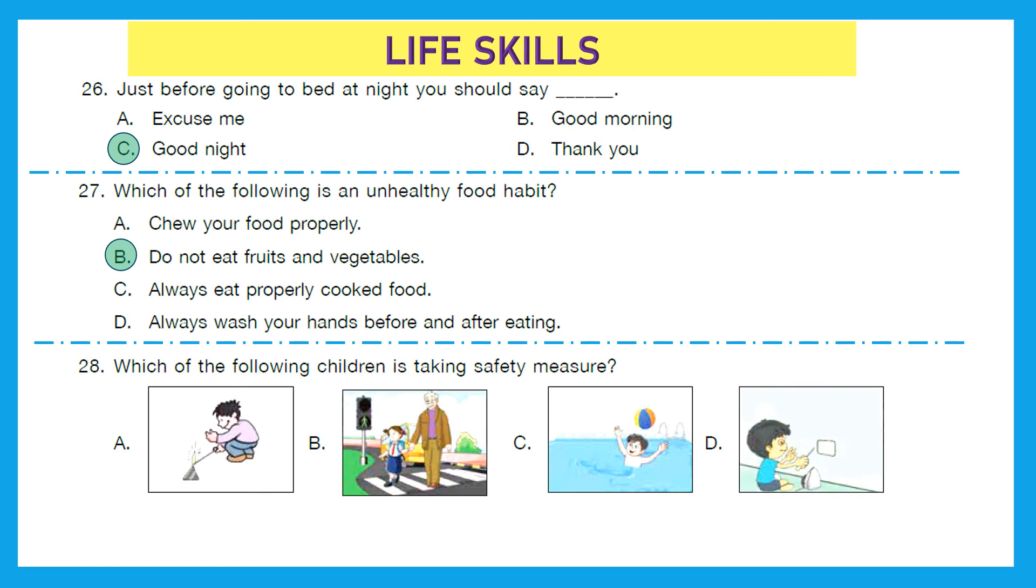Question 28: Which of the following children is taking safety measures? A, it looks like firecrackers are there. B is the kid is crossing the road through zebra crossing and the pedestrian signal is also on. C is playing in a deep pool and D is playing with electricity. So, the kid who is taking the proper safety measure is in option B.